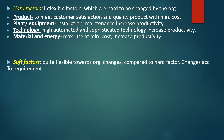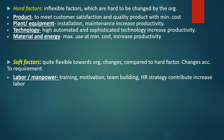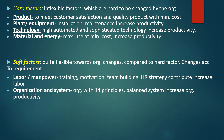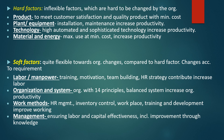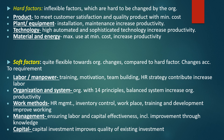Soft factors are quite flexible towards organizational changes compared to hard factors and change according to requirement. For example, labor or manpower — by giving training, motivation, team building, and HR strategy, they contribute to increased labor efficiency. In terms of organization and system, the 14 principles or a balanced system can be used to increase organizational productivity. Work method includes HR management, inventory control, workplace training, and development to improve the working environment. Management involves ensuring labor and capital effectiveness through improvement in knowledge. Lastly, capital investment improves the quality of existing investment.